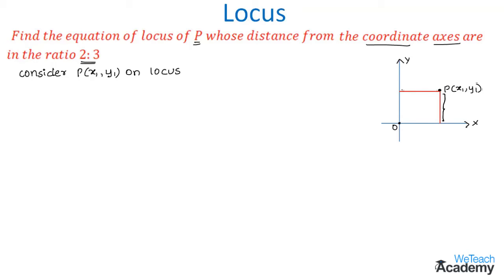So we can write this condition as: distance of point P from the x-axis to distance of point P from the y-axis is equal to the ratio 2:3.